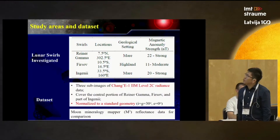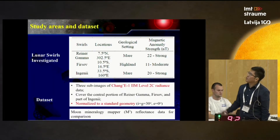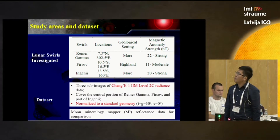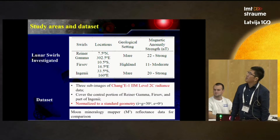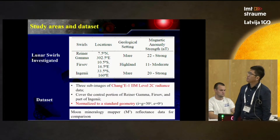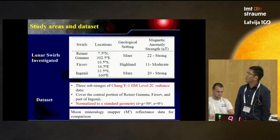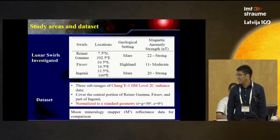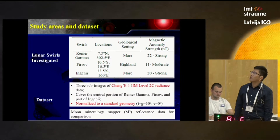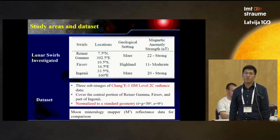This slide shows the study area and the data used. Three lunar swirl regions are investigated: Reiner Gamma, Ferso in the highlands, and also part of Ingenii. The locations and magnetic anomaly strength are indicated in the table. The data used is Chang'e-1 IIM level 2 radiance data covering the central portions of these regions, normalized to a standard viewing geometry. We also use Moon Mineralogy Mapper reflectance data for comparison.